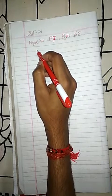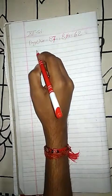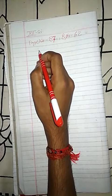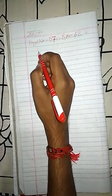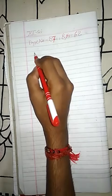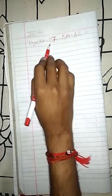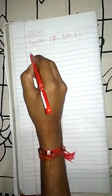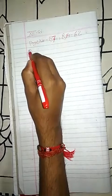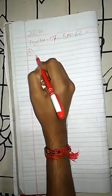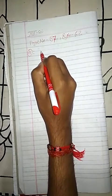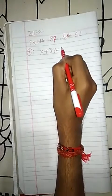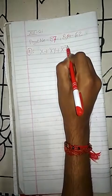The question says: convert the following expression to canonical sum of product. It means we have to convert a given expression into the canonical sum of product. As I told you earlier about sum of product and product of sum. There are three questions but I am going to tell you only one, and using the logic you will do the rest.